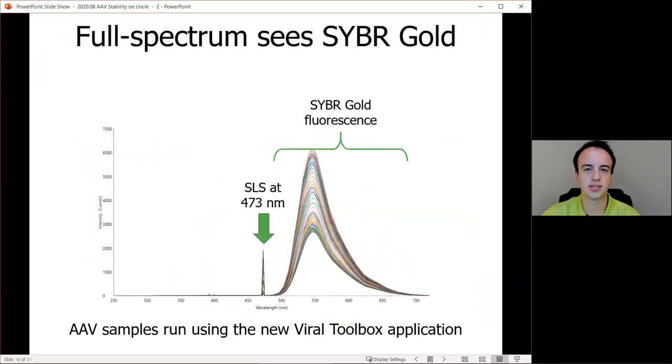So here's a look at the raw fluorescence data seen on UNCLE with Sypro Gold. This is the same concentration of AAV9 that we saw earlier, but this time we've added Sypro Gold and we're using the blue 473 nanometer laser. So in this case, we can see that the dye's fluorescence is in a different part of the spectrum, between about 500 and 650 nanometers. We also see an SLS peak at 473 nanometers. In this experiment, only that blue 473 nanometer laser is used, so that's why there's no intrinsic fluorescence or SLS spectrum at 266. As temperature increases, we'll actually be measuring the area under the curve in this case, and the area under the curve will generally increase.